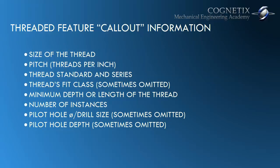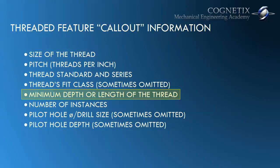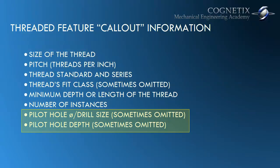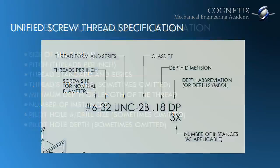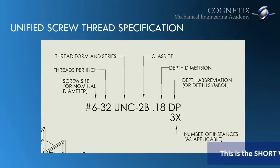The size of the thread, the pitch, which is the threads per inch, the thread standard and series that it adheres to, the thread's fit class — which is sometimes omitted — the minimum depth or length of the thread depending on whether we are talking about an internal or external thread, the number of instances of the threaded feature, and what is sometimes omitted as well — and we'll talk about this later — is the pilot hole diameter or drill size along with its depth.